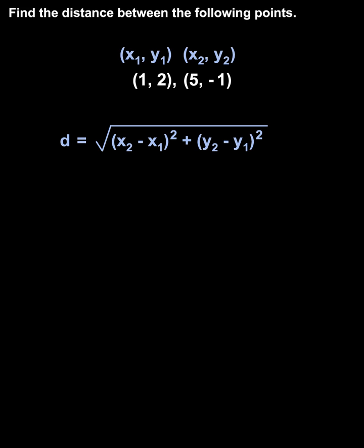Plugging the given information into the formula, we have the square root of (x₂, which is 5, minus x₁, which is 1) squared, plus (y₂, which is -1, minus y₁, which is 2) squared.